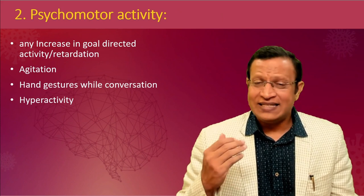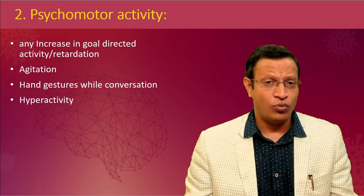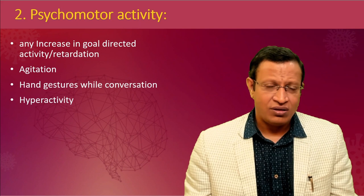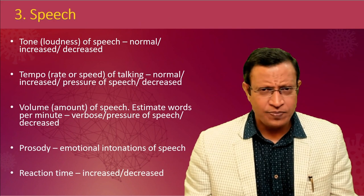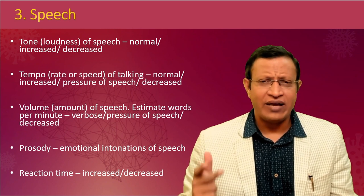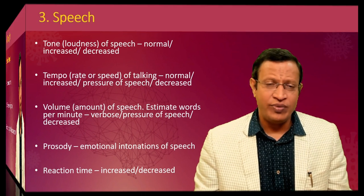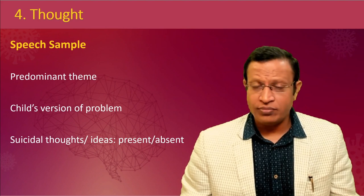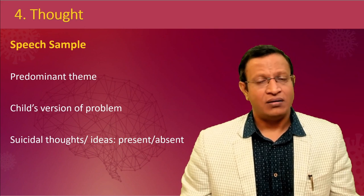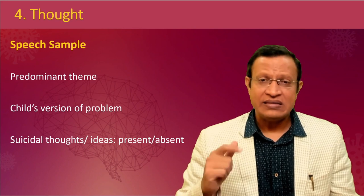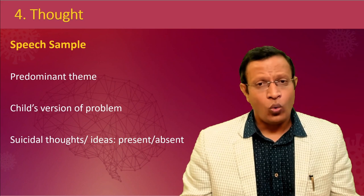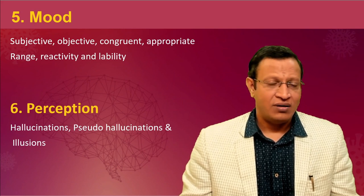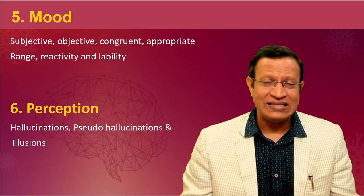For psychomotor activity, check whether there is increased goal-directed activity, vegetation, hand and body gestures during conversation, and hyperactivity. For speech, assess tone, tempo, reaction time, volume, and prosody. For thought assessment, take a good speech sample and look for any predominant theme, child versions of the problem, and suicidal thoughts. Comment on the form, stream, possession of thought, and content of thought. For mood, assess whether it is subjective and objective, congruent, appropriate, and comment on range and reactivity. Assessment of mood is more difficult in young children and easier in adolescents.